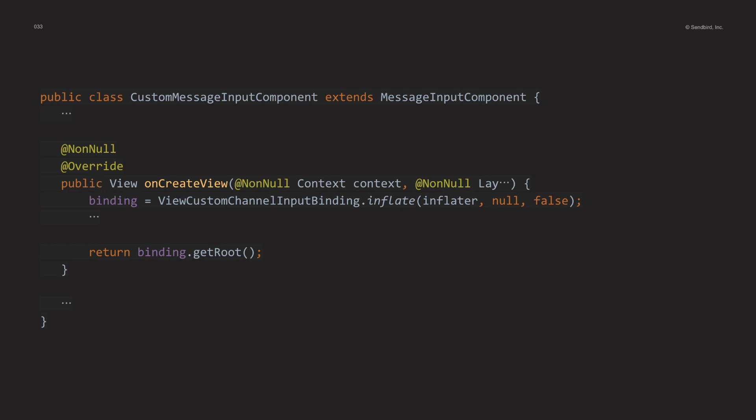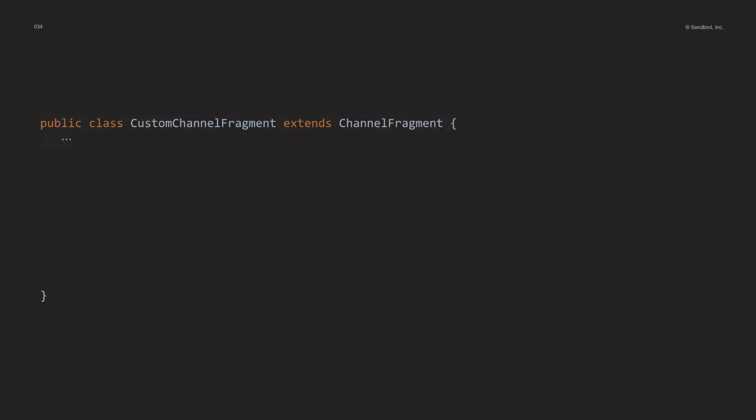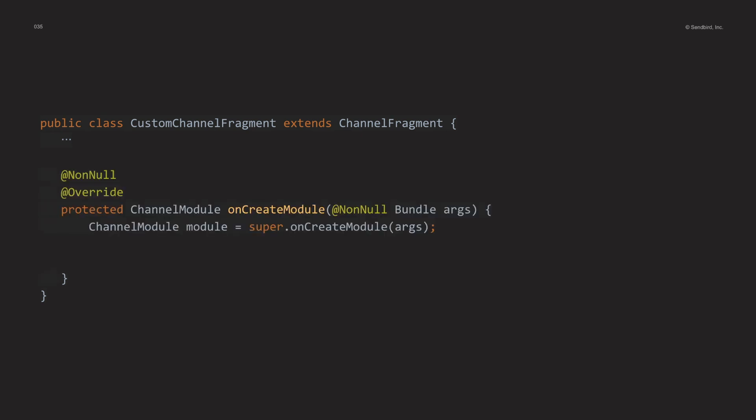The view that this component creates has been replaced. Let's apply this custom component to a fragment. Inherit the channel fragment and overwrite the onCreateModule method — we should call the super to get the existing module. Through the setInputComponent method in the module, create and apply a custom component, then return the module. This will apply your custom component to your custom fragment.